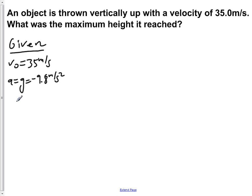We want to know the maximum height that it reached, so we want to know what y final is equal to. We know that y naught is equal to 0 meters, so our delta y is also equal to the height that we want to find.